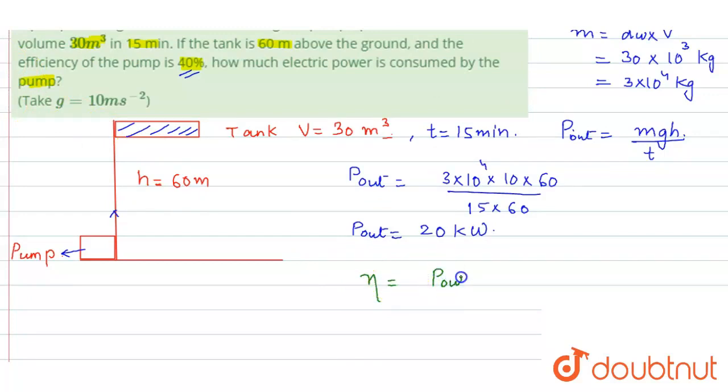So P output is 20 kilowatts and from here we can find that the total power that is consumed, P input, is the total power that will be consumed. So P input comes out to be simply 50 kilowatts. Now you can see that this is the total power consumed by the pump.